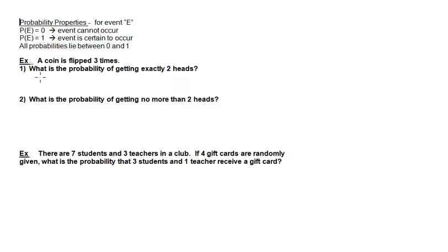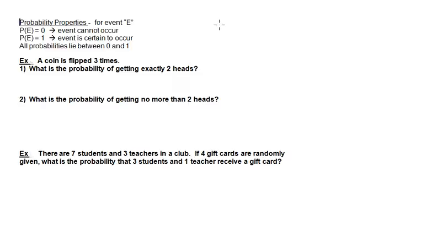So let's take a look at our example here. A coin is flipped three times, and we're asked what is the probability of getting exactly two heads. In order to determine this, it helps to see the sample space. Since we're still novices at this, I'm actually going to write out the possible outcomes. If a coin is flipped three times, every flip will produce either a head or a tail.